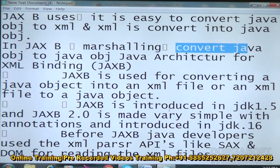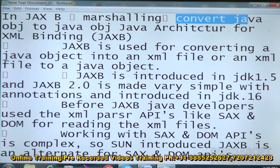JAXB was introduced in JDK 1.5, and version 2.0 made it very simple with annotations, which were introduced in JDK 1.6.